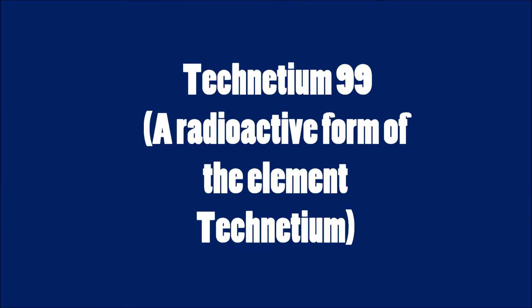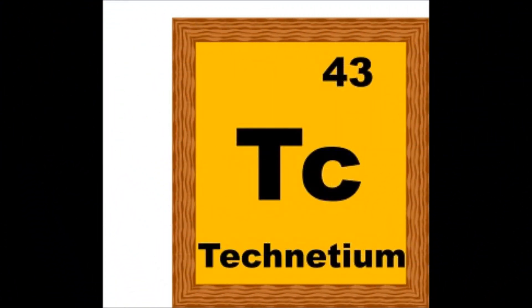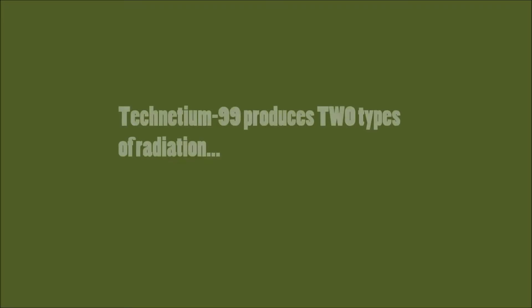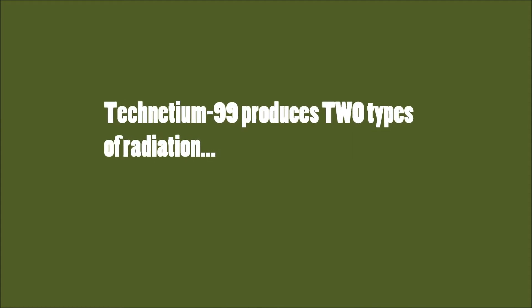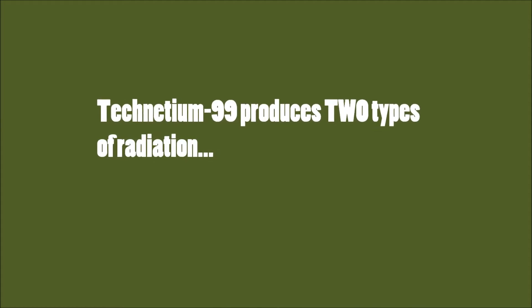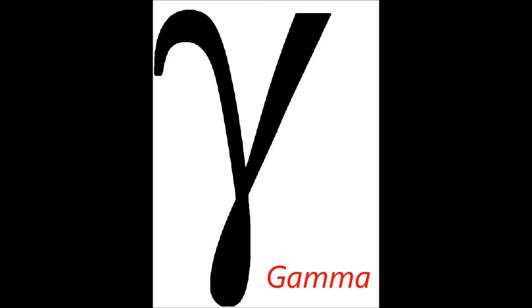The name of the radioisotope is Technetium-99. It is a radioactive form of the element technetium. The type of radiation produced by Technetium-99 is gamma rays and beta rays.